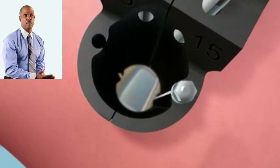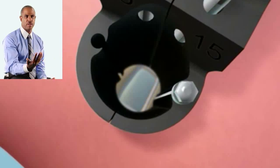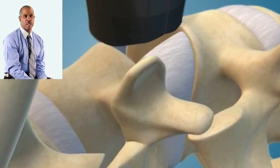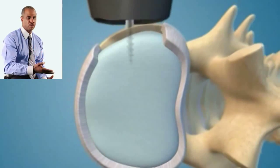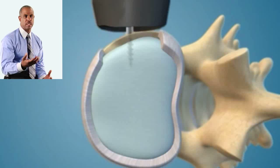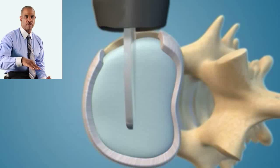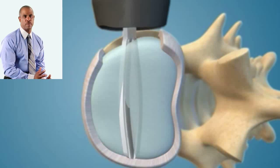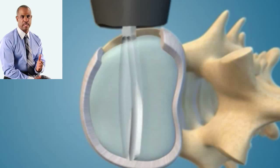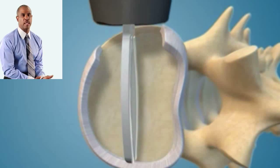The disc is removed in a piecemeal fashion, just taking out parts of it. We'll then use various tools to remove all the cartilaginous parts of the disc and scrape them off the bone while taking great care to preserve the bone. We completely clean out the disc space as completely as we can.